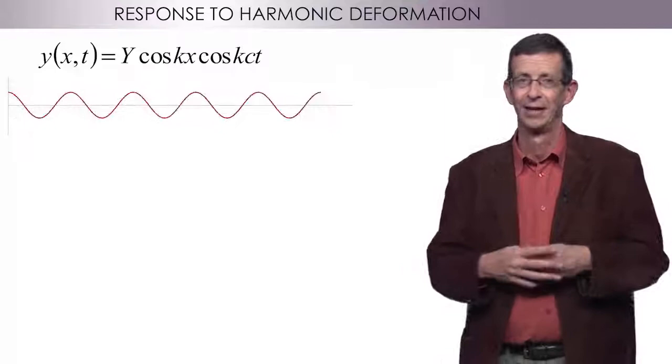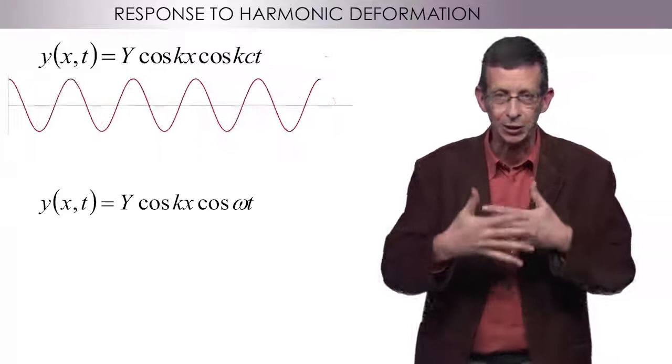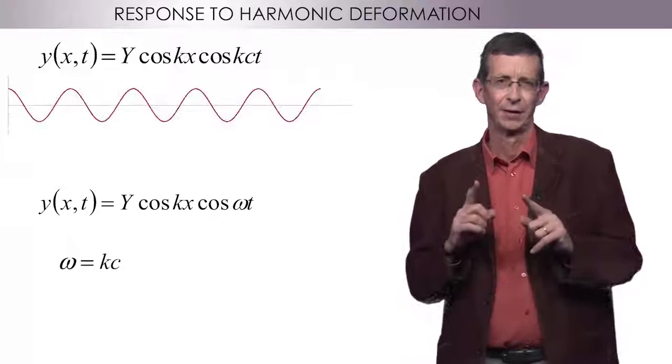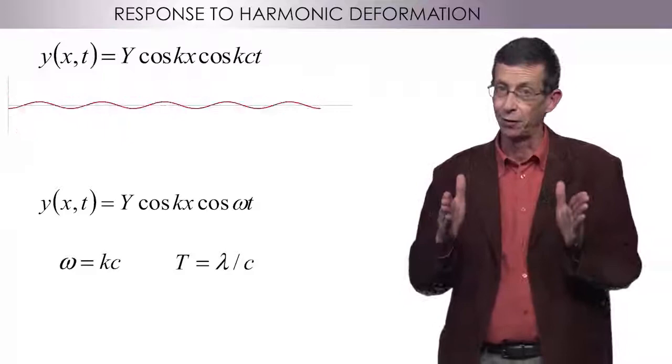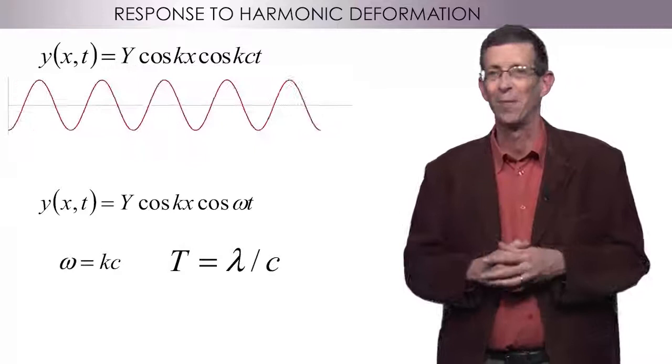And there is a relation between the wave number k and the frequency of the oscillation, omega equals kc. In other terms, there is a direct relation between the wavelength of the sinusoidal shape, lambda, and the period of oscillation, T equals lambda over c.